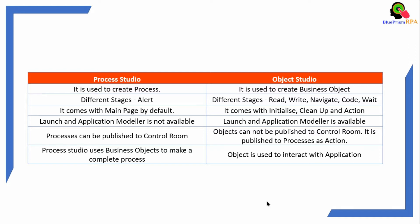Object Studio comes with the Initialize, Cleanup, and Action pages. In Process Studio, Launch and Application Model are not available, but in Object Studio they are available. Processes can be published to the Control Room, but objects cannot be published to the Control Room — they are published to a process only as an action.